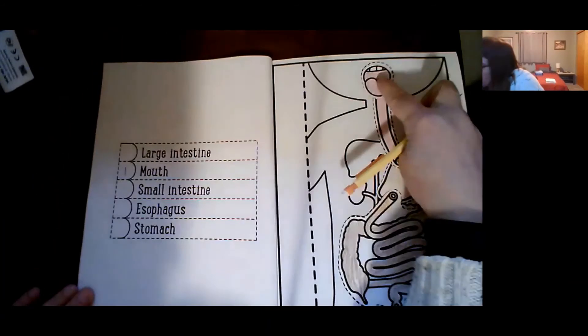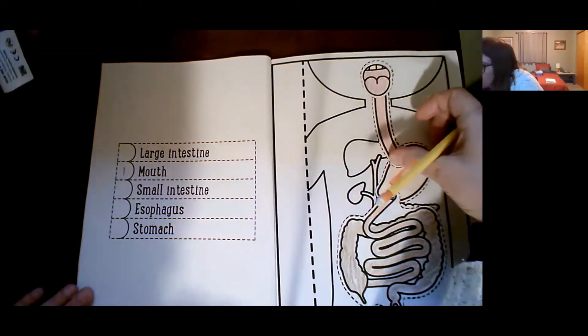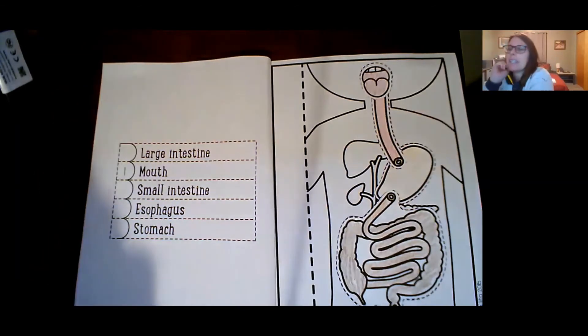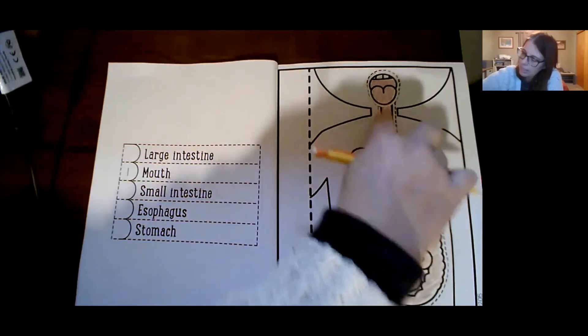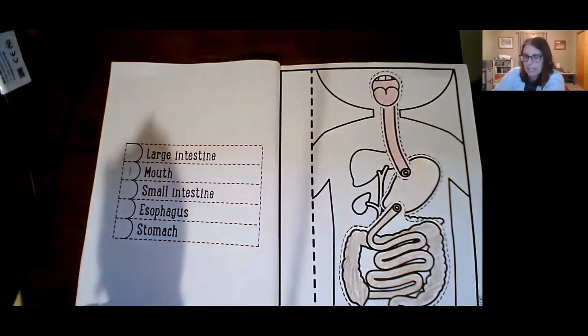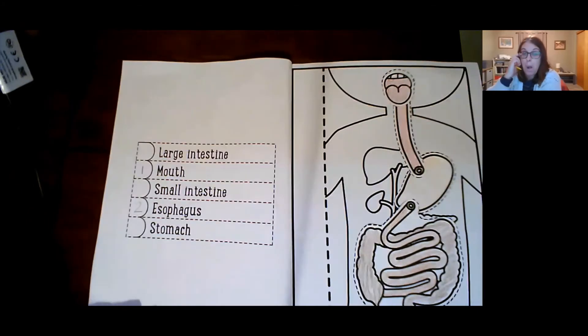Okay. Now, after the mouth, food travels down the esophagus. We kind of say esophagus, but it starts with what letter? Eh, eh, eh, or E. Yep. That's an E. So esophagus. Okay. So find the esophagus. We'll put a two. There we go.